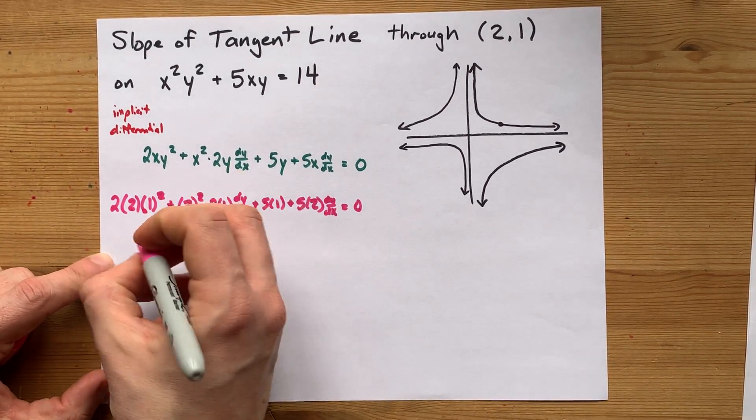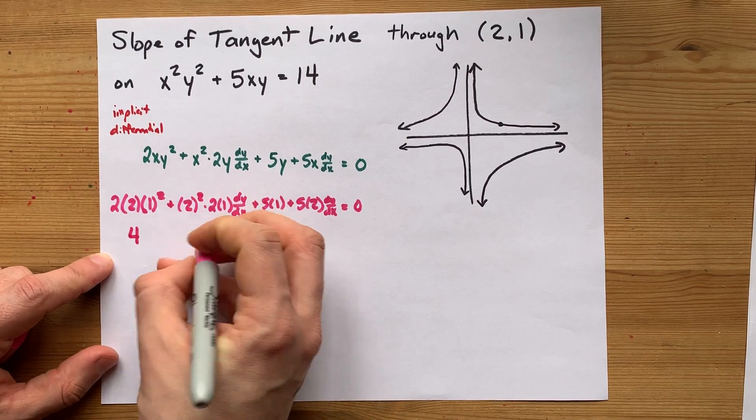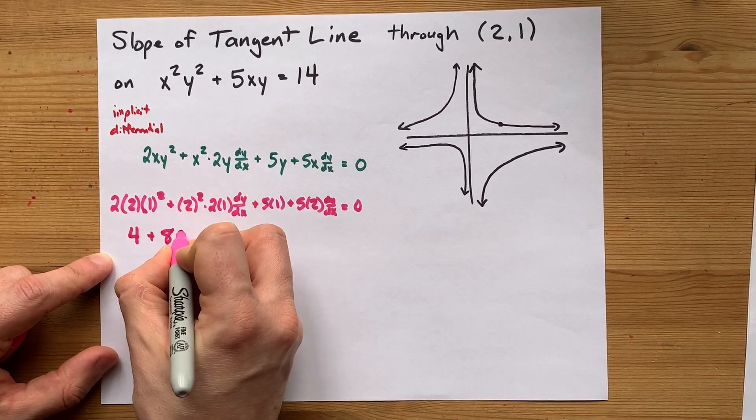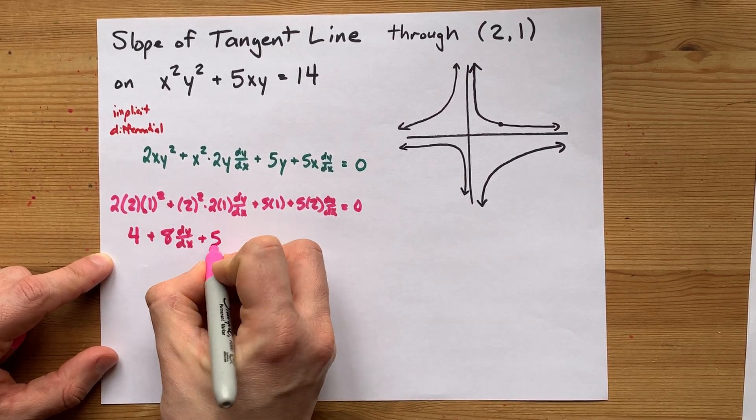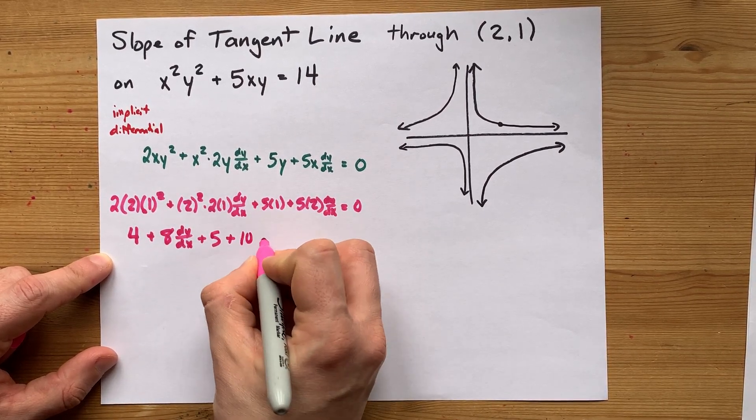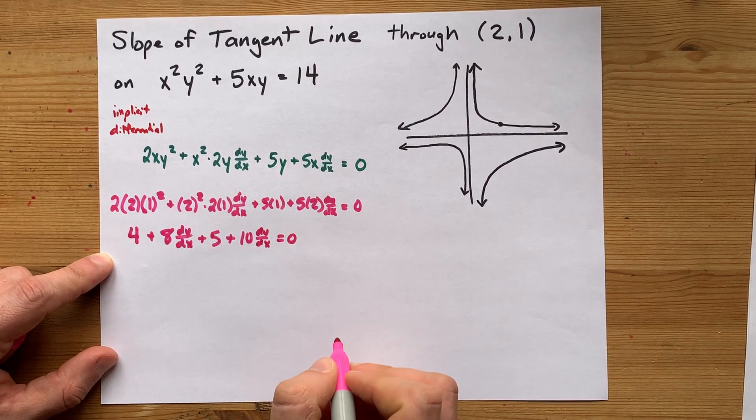2 times 2 times 1 is 4. 2 times 2 times 2 is 8 here. That's 8 dy by dx's. Plus 5 plus 10 dy by dx's equals 0.